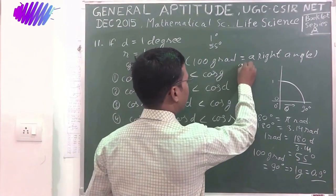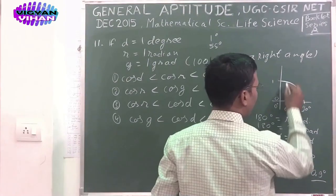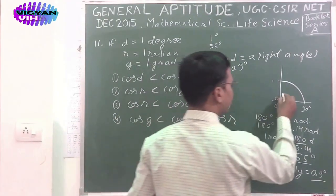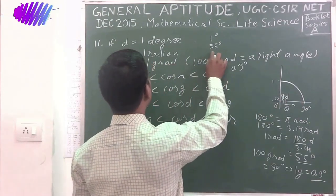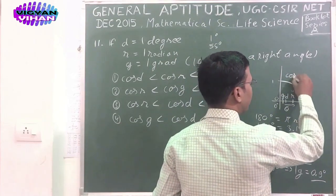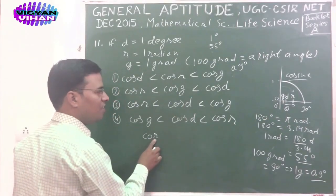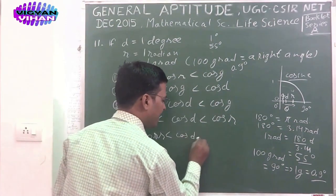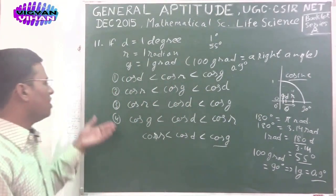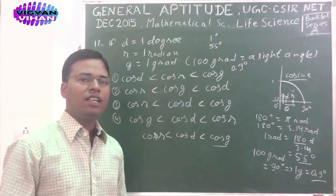Converting all units to degrees: 1 gradient ≈ 0.9°, 1 degree = 1°, and 1 radian ≈ 57°. Since cosine decreases from 0° to 90°, the larger the angle, the smaller the cosine. So arranged in ascending order of cosine: cos R is minimum, then cos D, then cos G is maximum. The correct answer is cos R < cos D < cos G, which is option 3.